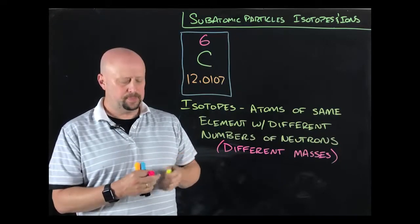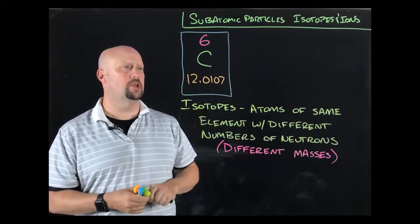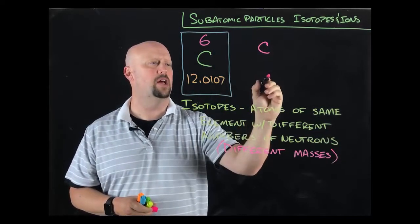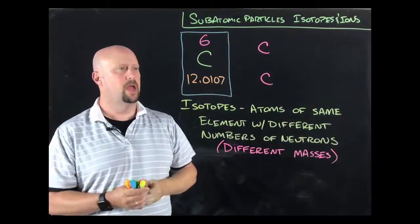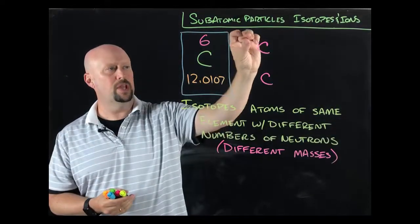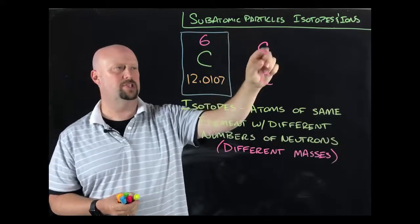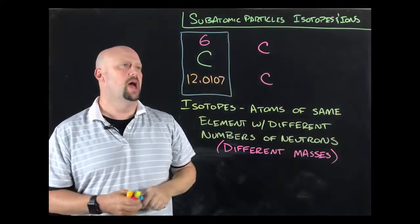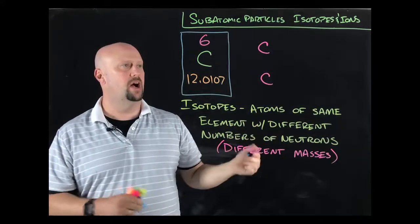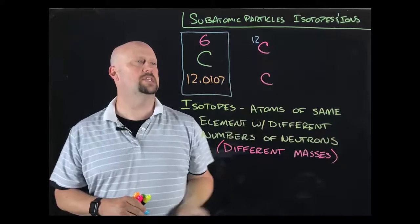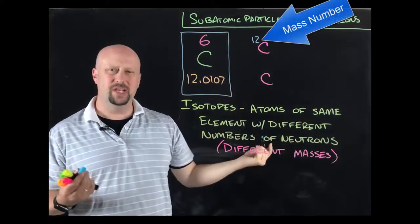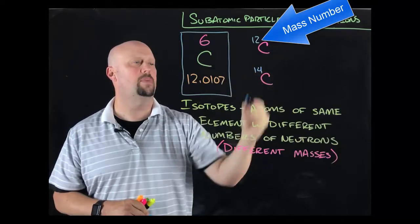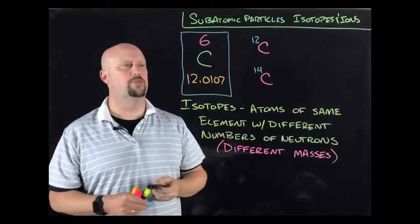I would denote that by doing a particular something called isotope notation. So I would write the symbol of the element. I'm going to write two of them because I'm going to have two different isotopes. And then in the upper left, so upper left above it, not like an exponent on this side, but like an exponent on the opposite side of the symbol, I would write the mass of that atom. So in this case, I'm going to put 12. And again, that would be in atomic mass units. And for this one, I'm going to write another common isotope of carbon, which is carbon-14.